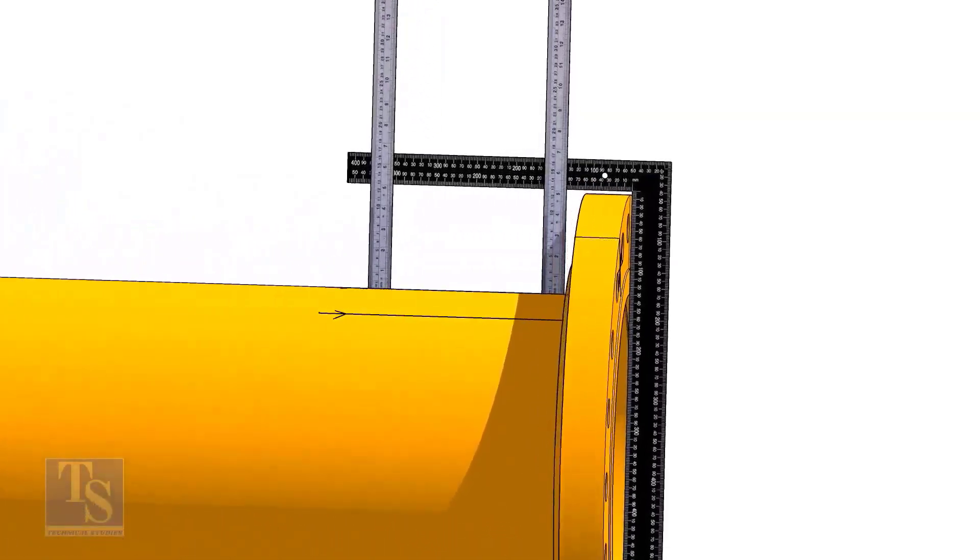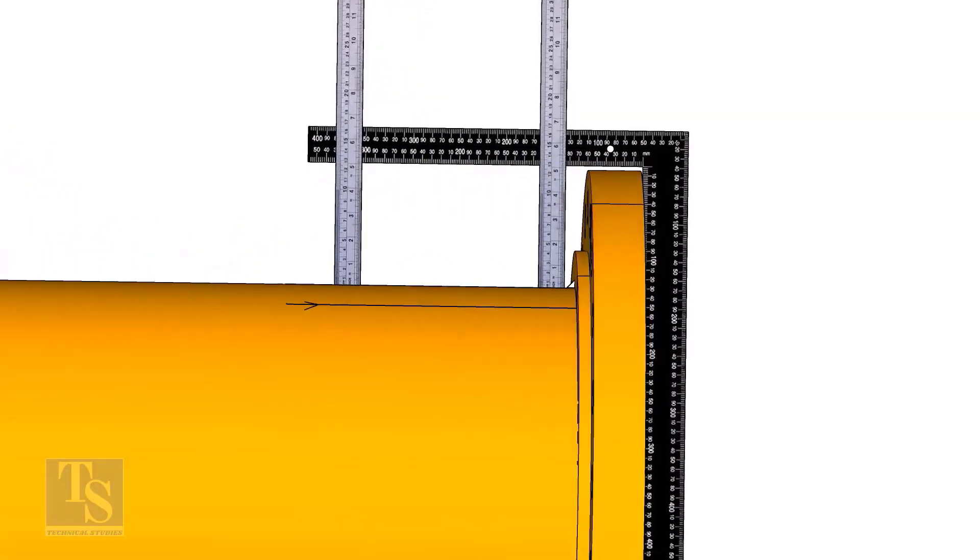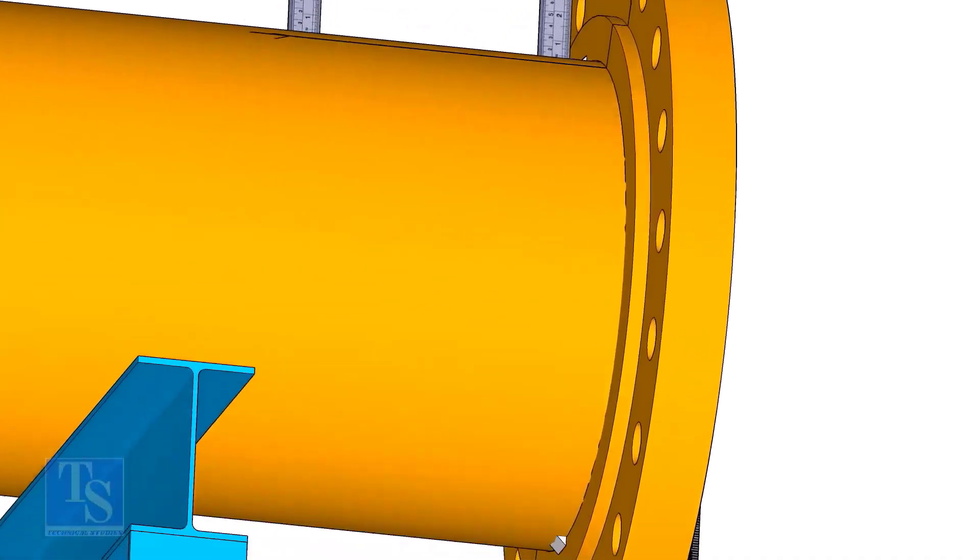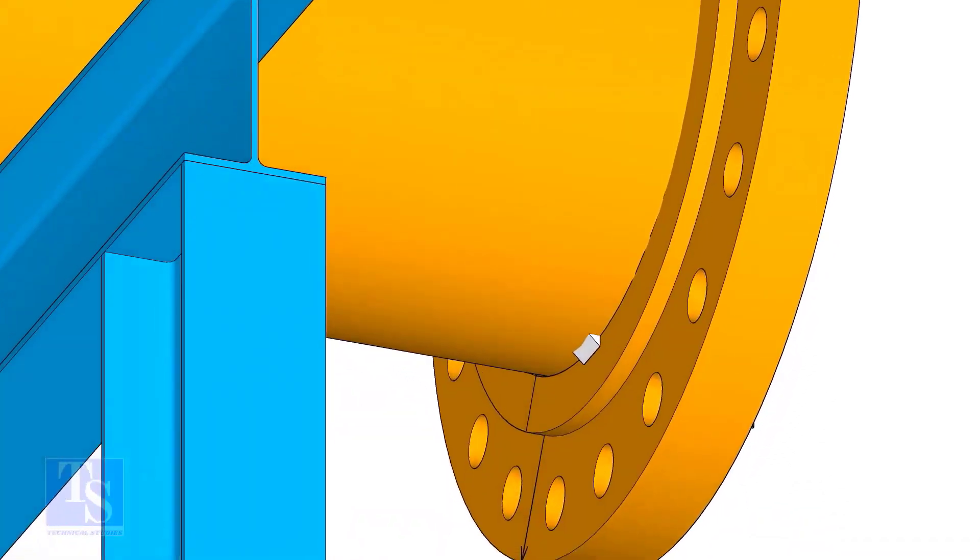Tack weld on the top of the pipe with the flange and check the squareness. If correct, tack weld at the bottom side also.